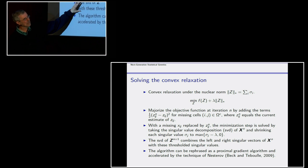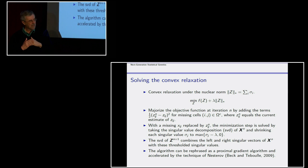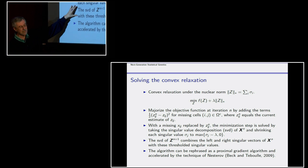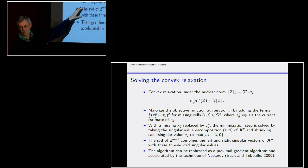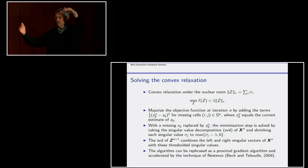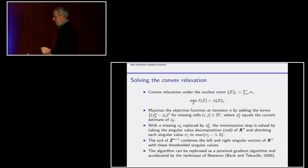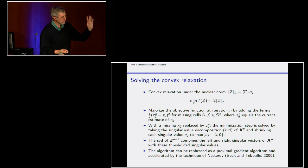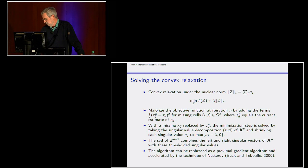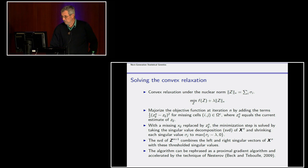Once you've shrunk the singular values, you have fewer outer products to combine. You take the existing left and right singular vectors and reconstruct your approximation. That algorithm drives the objective function downhill. You keep driving it downhill to minimize, and you can accelerate this. There are complicated ways of doing it phrased in the language common in the big data field, and it turns out to work quite well.